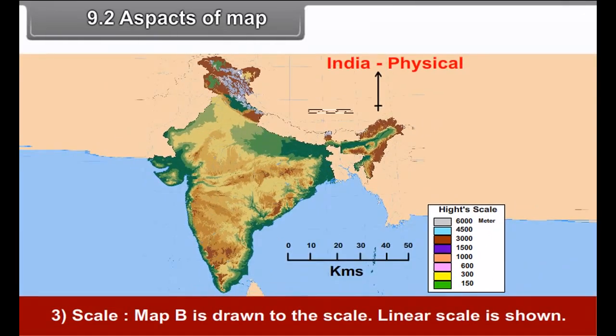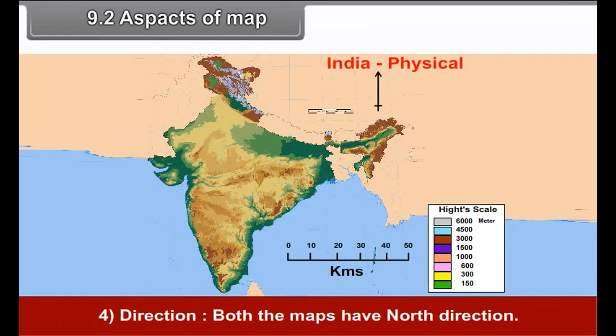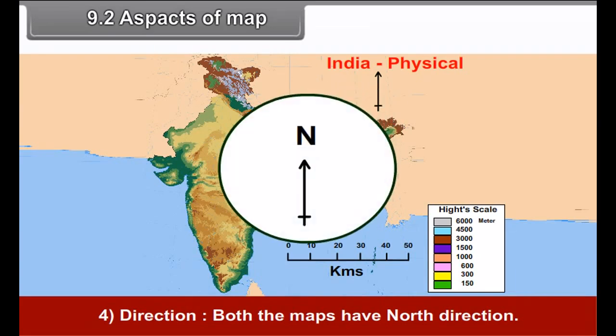3. Scale. Map B is drawn to the scale. Linear scale is shown. 4. Direction. Both the maps have north direction.